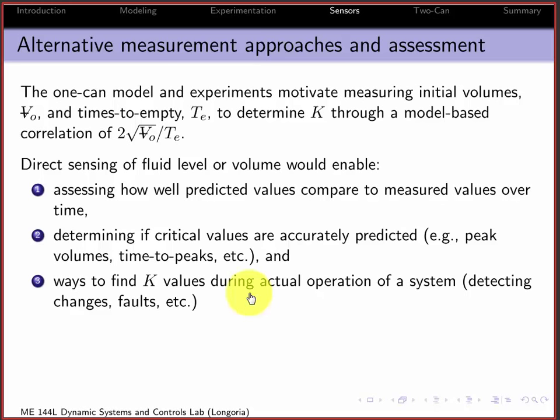If something changes in the system, maybe you could actually update your k values, or you could also find out if something goes wrong. Sensors obviously are used for detecting faults and so on in systems, so direct sensing is very valuable.